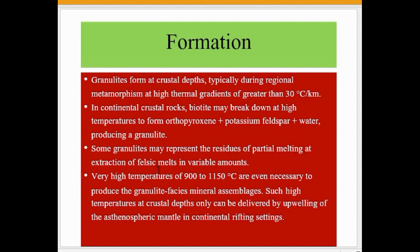Some granulites may represent the residue of partial melting after extraction of felsic melt in variable amounts. Very high temperatures of nearly 900 to 1150 degrees Celsius are necessary to produce the granulite facies. Each mineral assemblage at such high temperature at crustal depths can only be delivered by upwelling of the asthenospheric mantle in continental rifting settings.